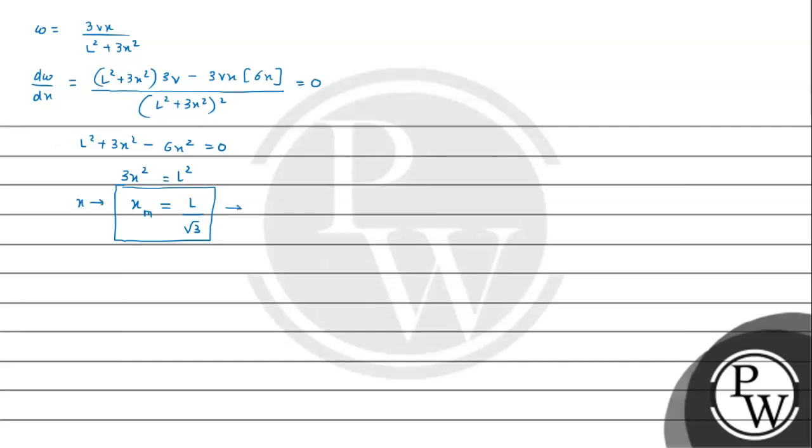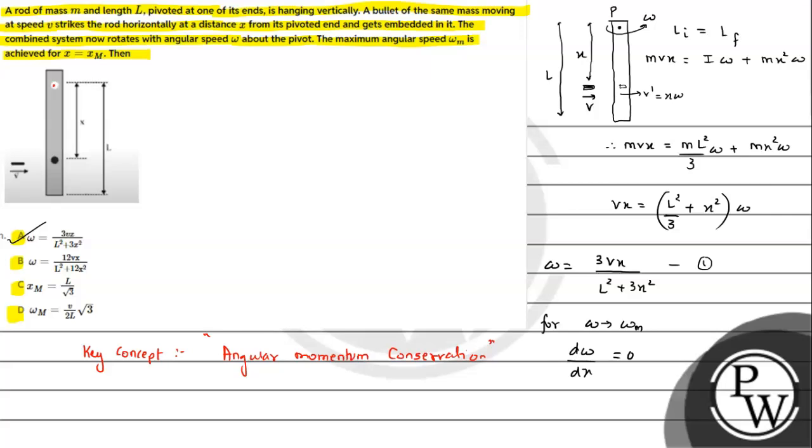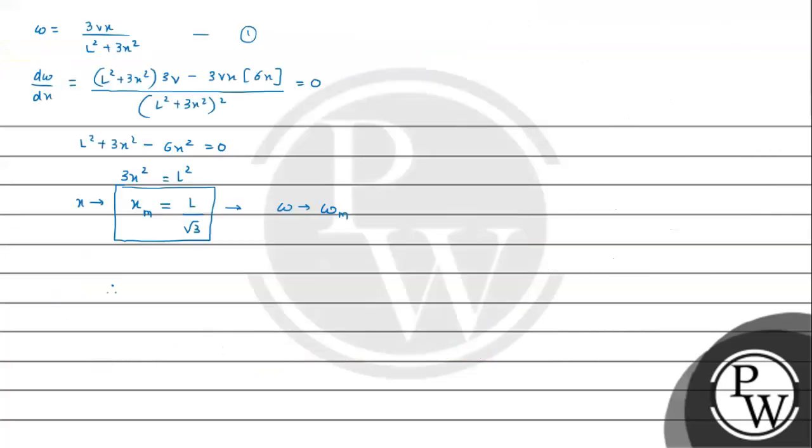So actually we can say omega will be omega_M. So X_M we have found. Now what can we calculate from this expression? Let's say our expression number 1 that we had. So from expression 1, omega_M will be equals to 3V X_M upon L square plus 3 X_M square.